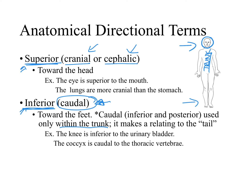Examples for the term superior: our eyes are superior to the mouth, so they are above the mouth. Our lungs are more cranial than the stomach, because the stomach is in the belly — in the abdominal cavity — and the lungs are in the chest, in the thoracic cavity. So the lungs are more cranial and more superior than the stomach.